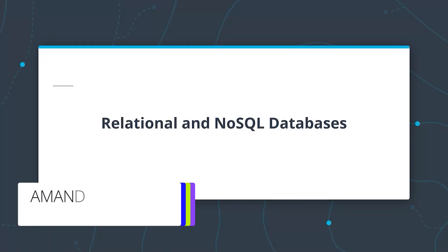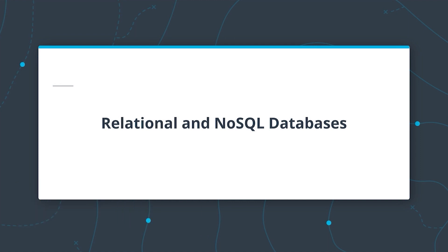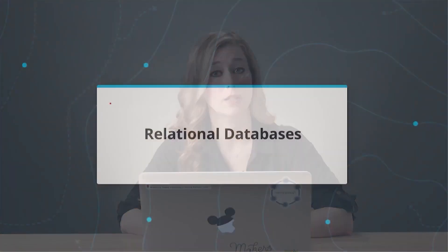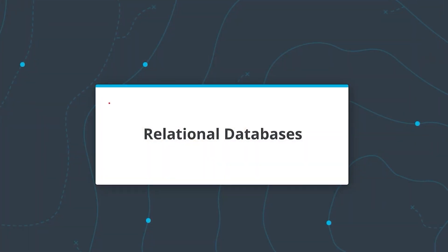Let's talk a little bit about relational and NoSQL databases. We've talked about the who, the what, and the why of data modeling. Now let's start focusing on how to do this for each type of database. Relational and non-relational databases do data modeling differently, and by learning about the differences between these two types of databases, we will learn why we have to take different approaches to data modeling. So let's first focus on relational databases.